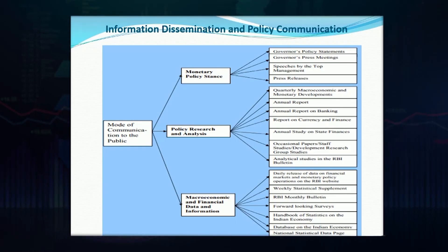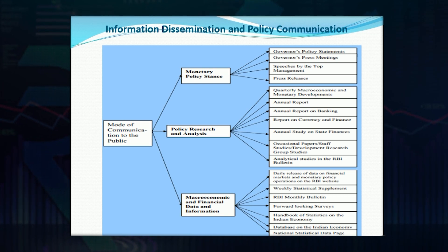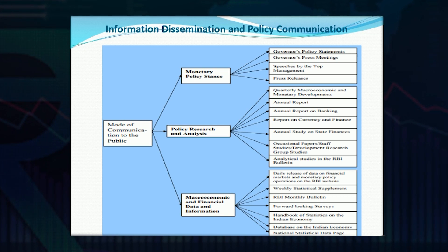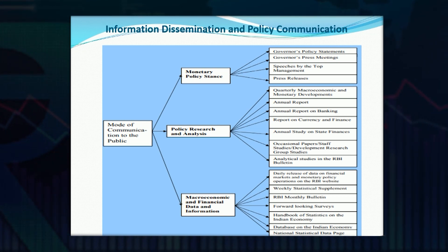When we look at the chart on information dissemination and policy communication, this chart effectively shows the mode of communication that the RBI carries on with the public. Three very important things have to be communicated to the public: one is the monetary policy stance, second is the policy research and analysis, while the third is the macroeconomic and financial data and information.